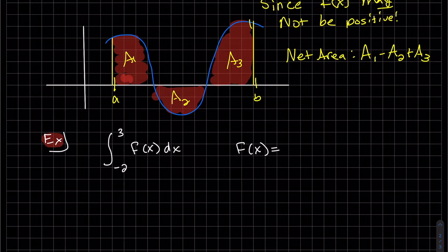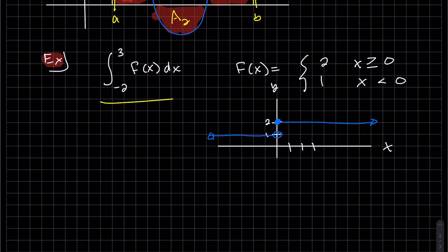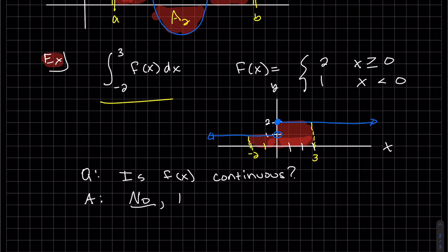Let's look at some examples. If we have a function, it's a piecewise function defined to be two for x is greater than or equal to zero and one for x less than zero. Let's draw this out. To the right of zero, x is greater than zero, the function is two, and it's one to the left of zero. We're looking at -2 to 3. Before we get started, is f(x) continuous? The answer is no, but it is integrable.